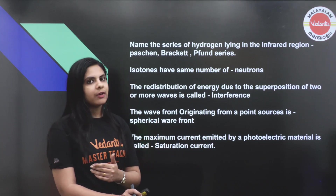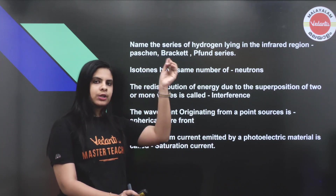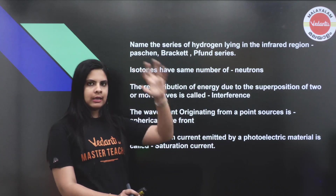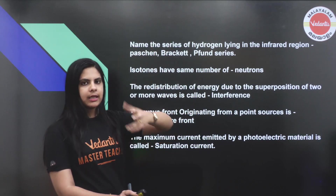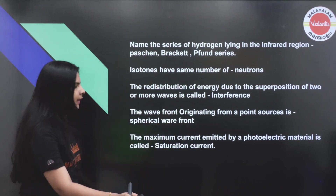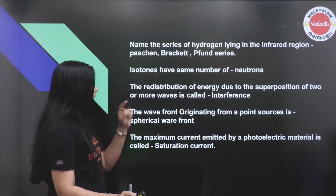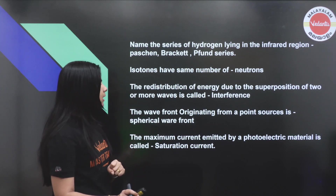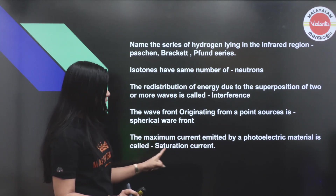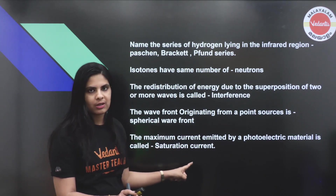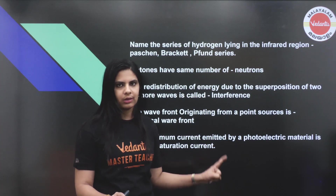A line source produces a cylindrical wavefront. If you look at a plane wavefront, it originates from a source at infinity. The maximum current emitted by a photoelectric material is called saturation current.